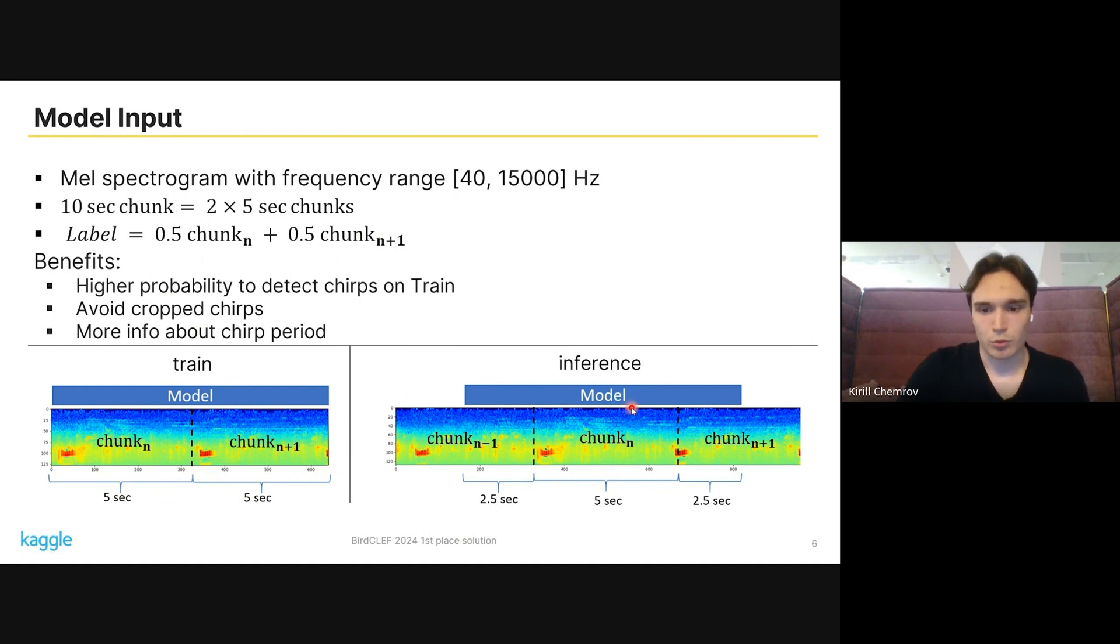As for inference, to label a 5-second chunk, we concatenate it with 2.5 seconds of the previous chunk and 2.5 seconds of the next chunk.